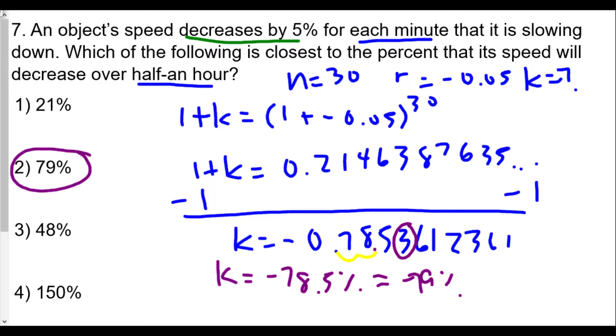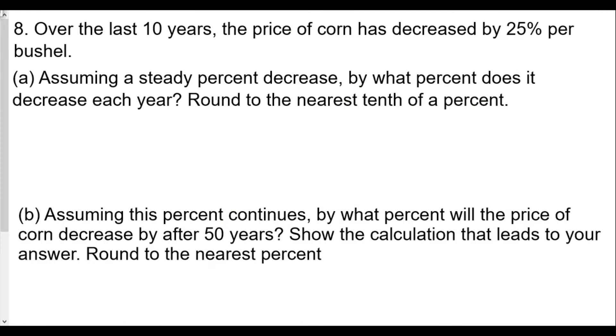Number 8: Over the past 10 years, the price of corn has decreased by 25 percent per bushel. Part a: Assuming a steady percent decrease, by what percent does it decrease each year? Round to the nearest tenth of a percent. We see here decrease by 25 means our r value will be negative 0.25.